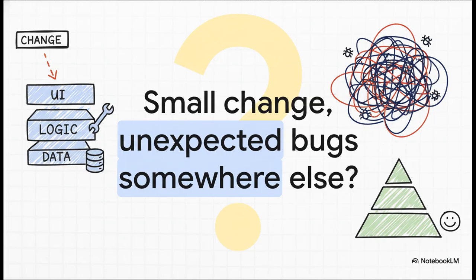This is the classic symptom. You've been there, right? You fix a tiny styling issue on, say, the user profile page, and suddenly the payment processing logic completely breaks. That's what happens in a tangled up project, where everything is so interconnected that touching one piece sends a shock wave through the whole system.